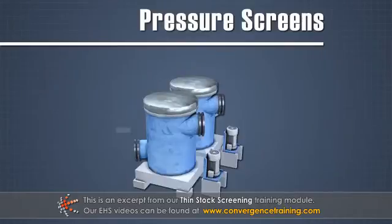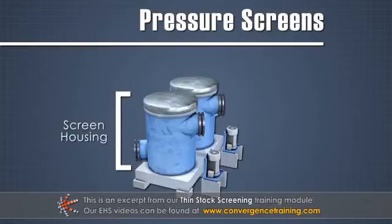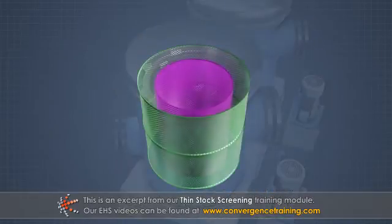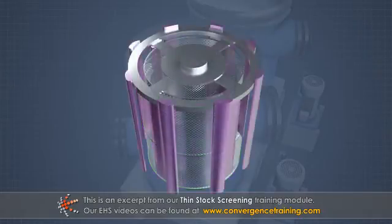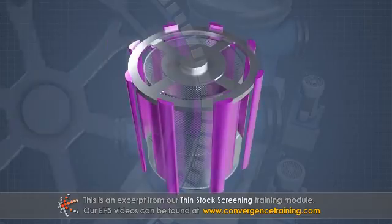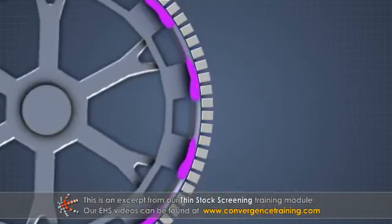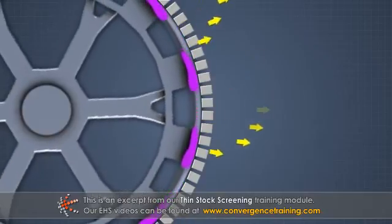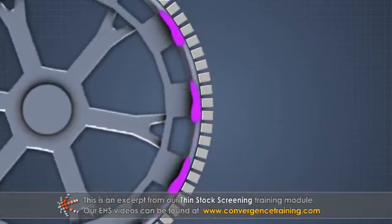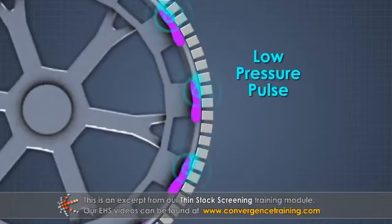Pressure screens consist of a vertical or horizontal screen housing that contains one or two perforated cylindrical screen baskets and a shaft-driven rotor. Foils or bumps on the rotor travel in close proximity to the screen surface and help force fibers through the openings, and then create a low-pressure pulse as they pass by.